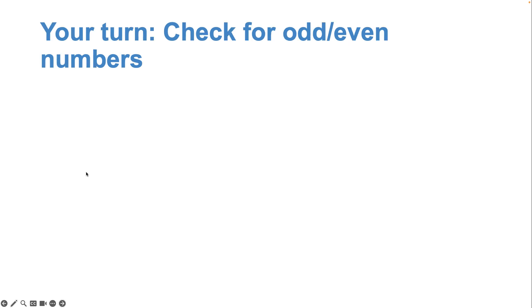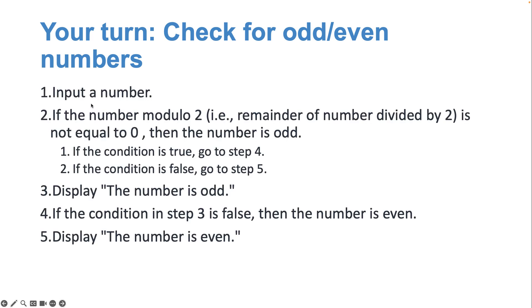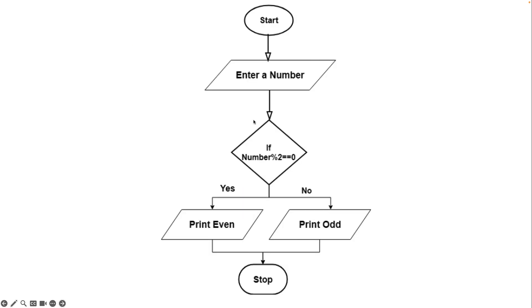Let's see another example — checking if a number is odd or even. First, we receive a number. Second, we divide that number by 2 and check if the remainder is not equal to 0. If the remainder is not zero, the number is odd and we display 'the number is odd.' If the reverse condition is true — the remainder equals zero — the number is even and we display 'the number is even.' We follow this sequence of steps.